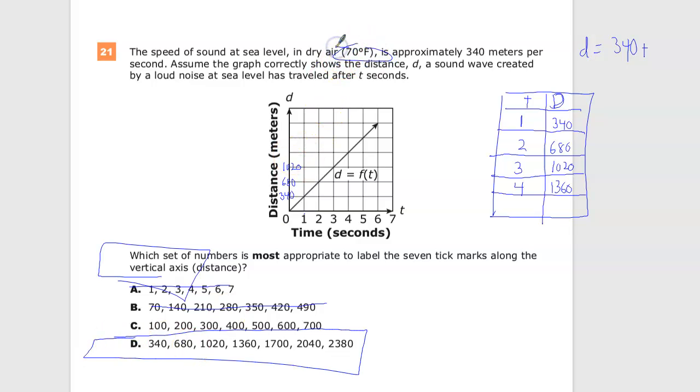This is called a distractor because it has nothing to do with anything in this question, really, other than to re-identify dry air. But it's showing you meters per second, that's a distance and a time, so that's what you need to work with in order to get your final answer. So 21 is D.